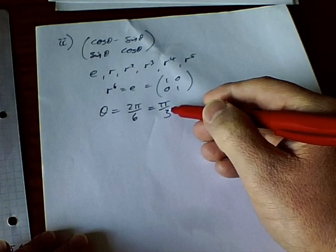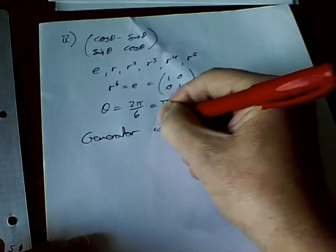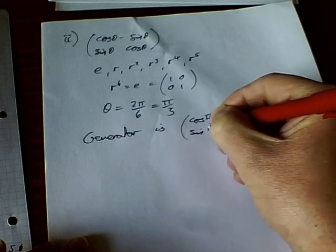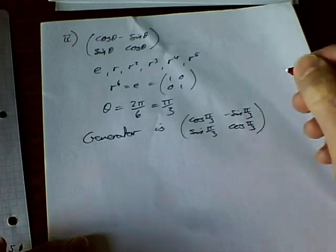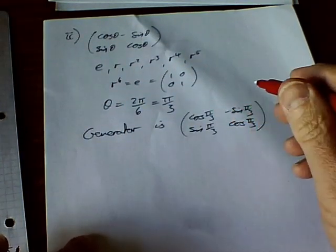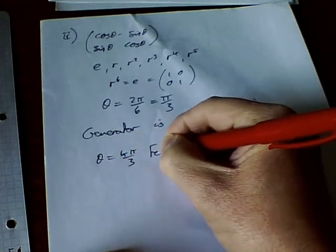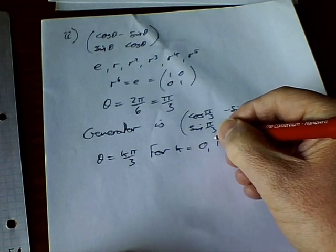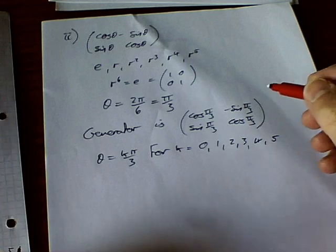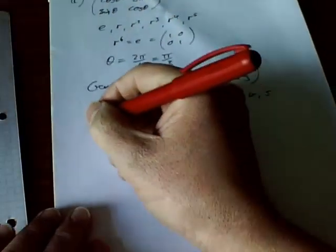Six rotations of π/3 take us all the way around the loop. So the generator of our subgroup is the matrix cos(π/3), minus sin(π/3), sin(π/3), cos(π/3). The full subgroup has elements for θ = kπ/3, for k = 0, 1, 2, 3, 4, 5.